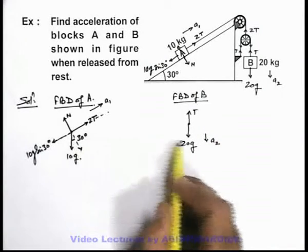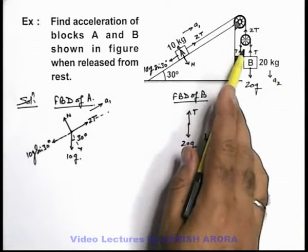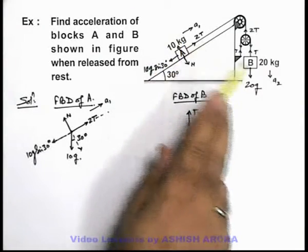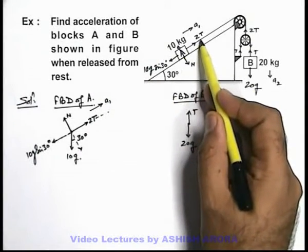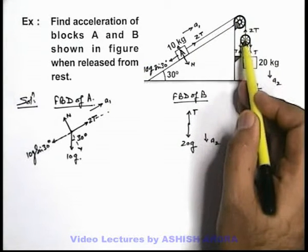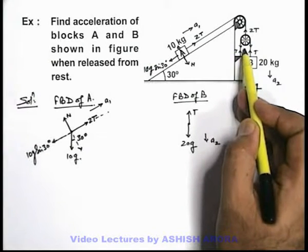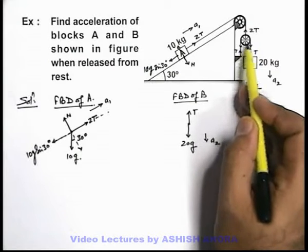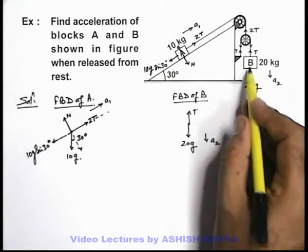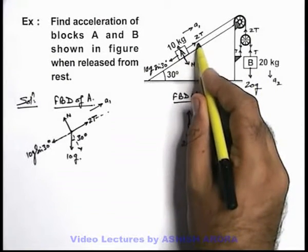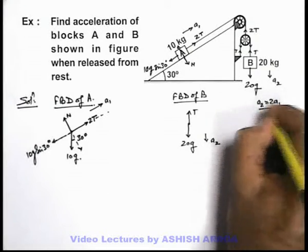Now before writing the equations of motion, we can develop a constraint relation between accelerations a1 and a2, since they're connected by a string and pulley. If block A slides up by a distance x, this string is connected to the pulley, so the pulley will come down by a distance x, and it will loosen this string on both sides by x. So block B will fall down by a distance 2x. Therefore B slides down by twice the distance A goes up, and the same relation exists between their accelerations: a2 = 2a1.